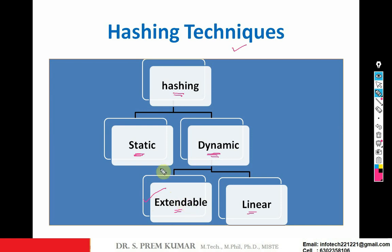In this class let us discuss what makes the difference between static hashing and dynamic hashing. In static hashing, once the values are stored in a bucket — a bucket is nothing but a memory location — the value remains in the same position. Whenever a new value comes, it goes to some other bucket; old values stay in the bucket where they were placed. In dynamic hashing, whenever a new value enters, there is a possibility the old values may change their buckets to some other memory locations.